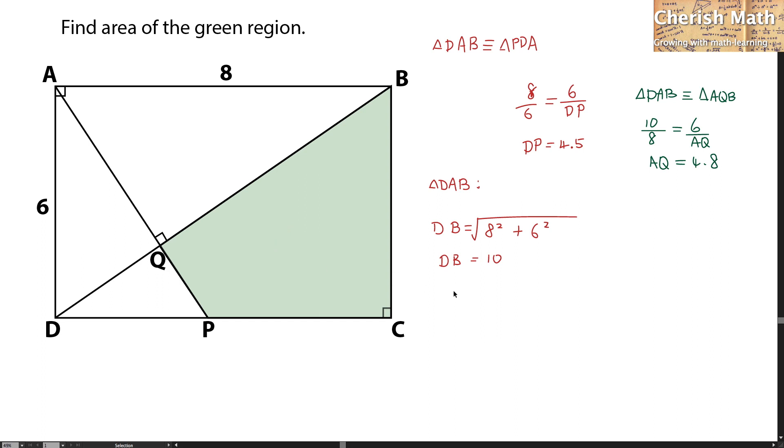I'm trying to find this green area by using the area of the rectangle minus the area of triangle ADP and minus the area of triangle AQB.